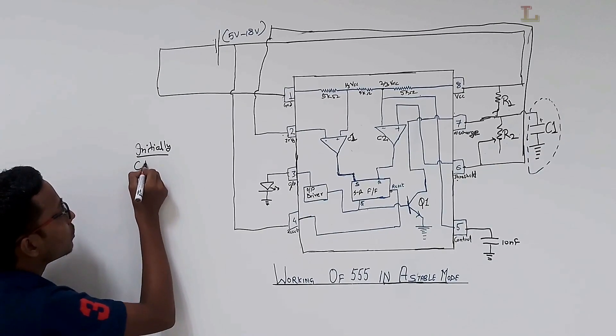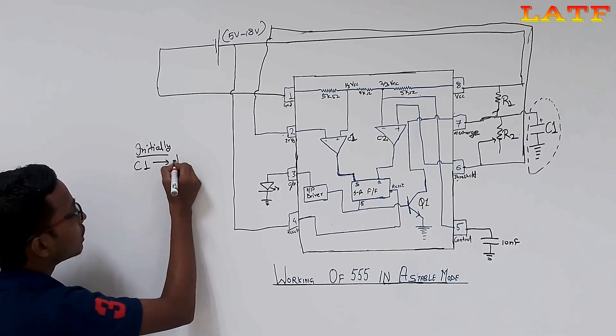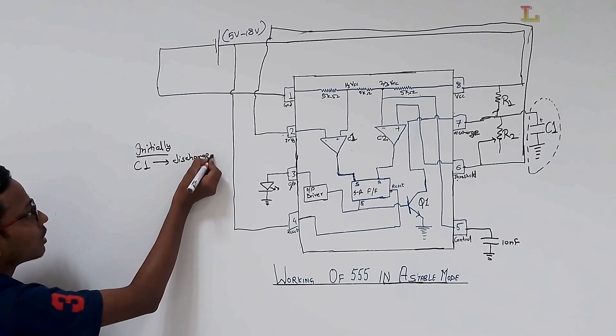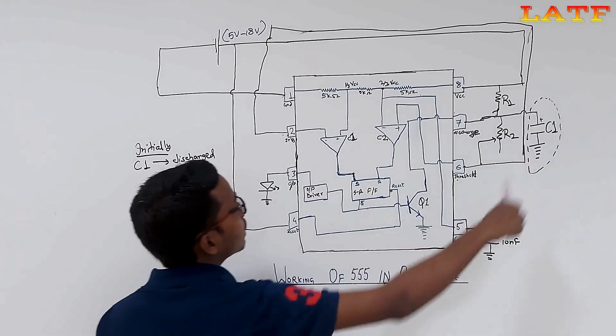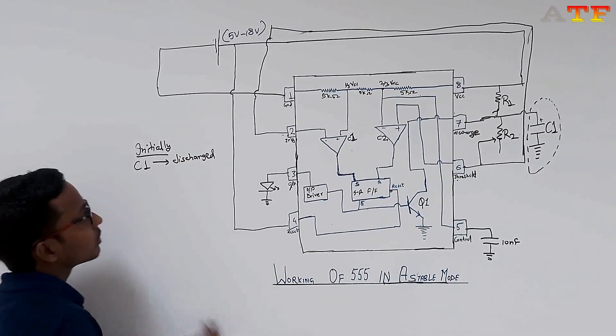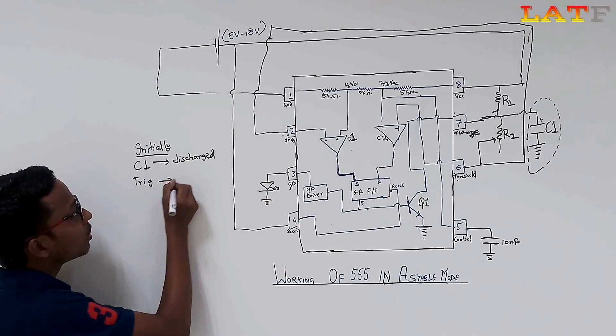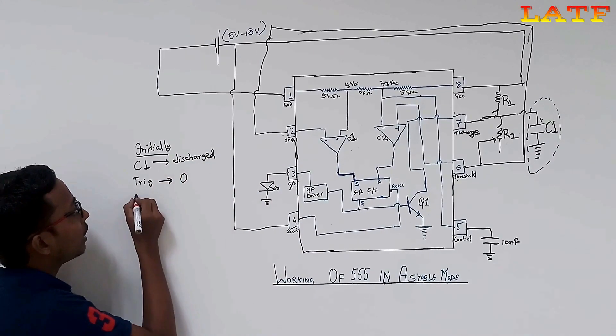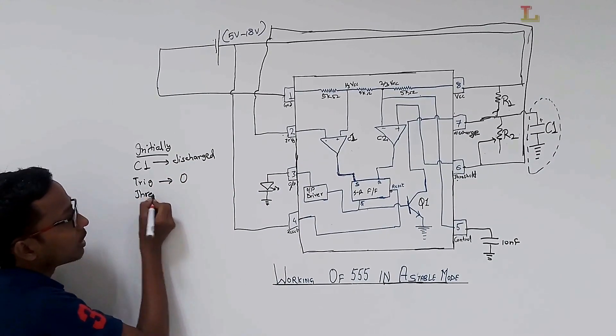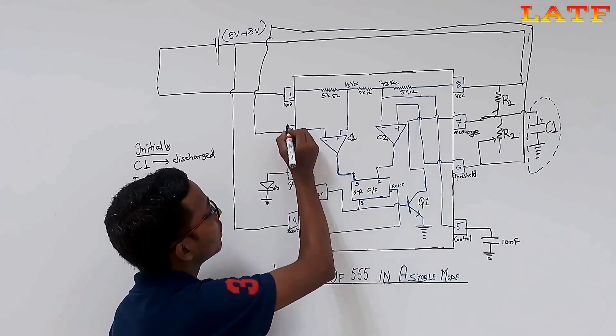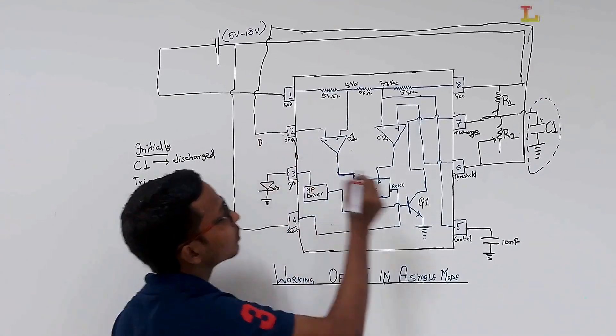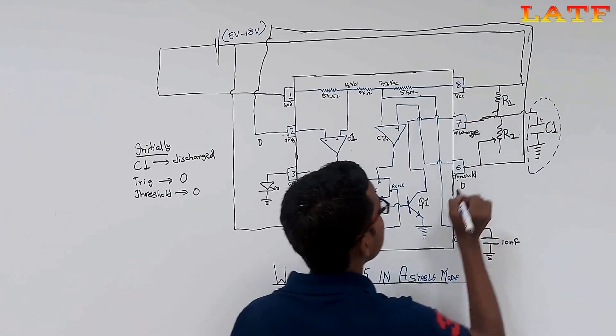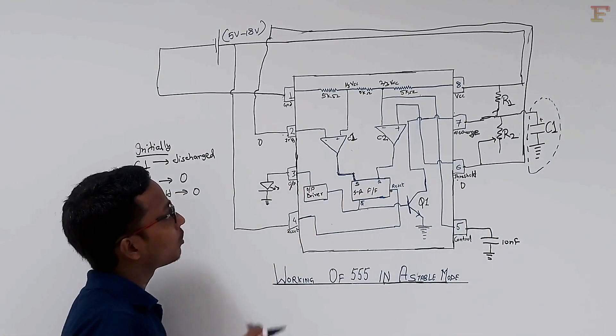Initially, this capacitor is discharged and starts charging. During this, trigger pin voltage is below VCC by 3 and that makes the lower comparator, i.e. comparator 1, output high. And, sets the flip-flop and output of 555 chip is high. And, the LED will turn on.